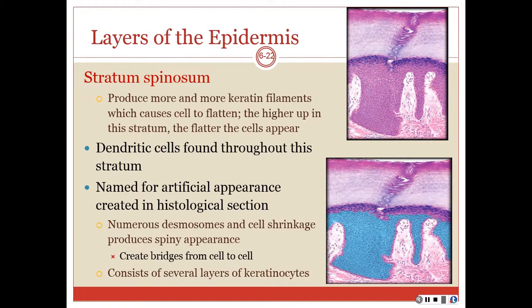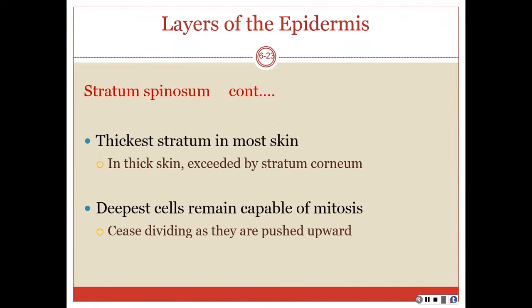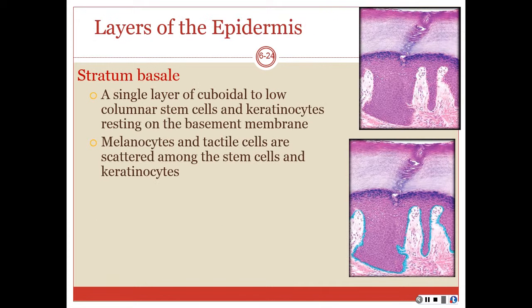The stratum basale is the deepest layer, resting on the basement membrane. It consists of a single layer of cuboidal to low columnar stem cells and keratinocytes. Melanocytes, tactile cells, and stem cells are scattered among these.